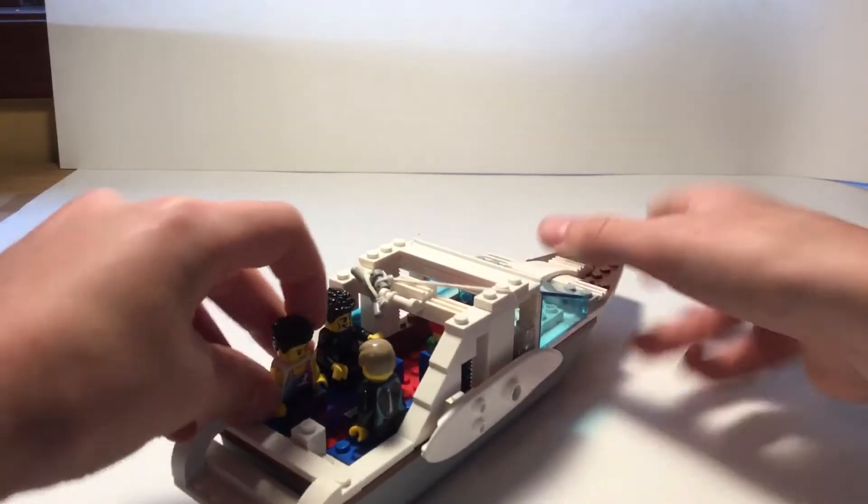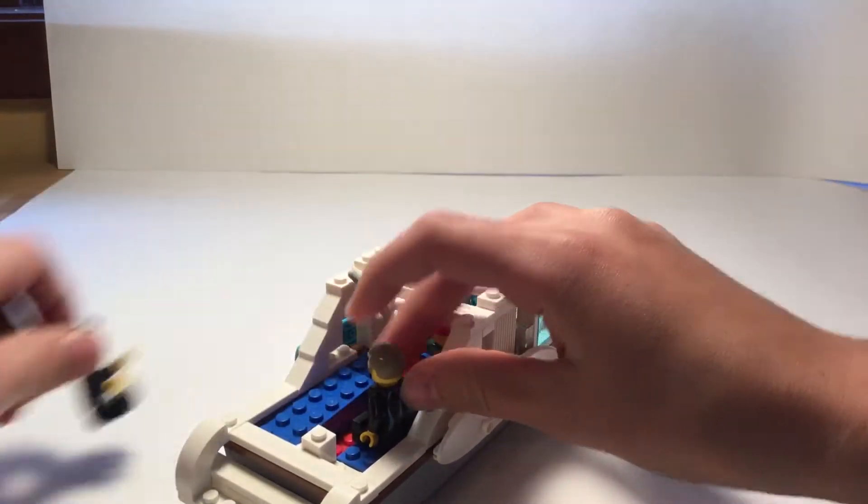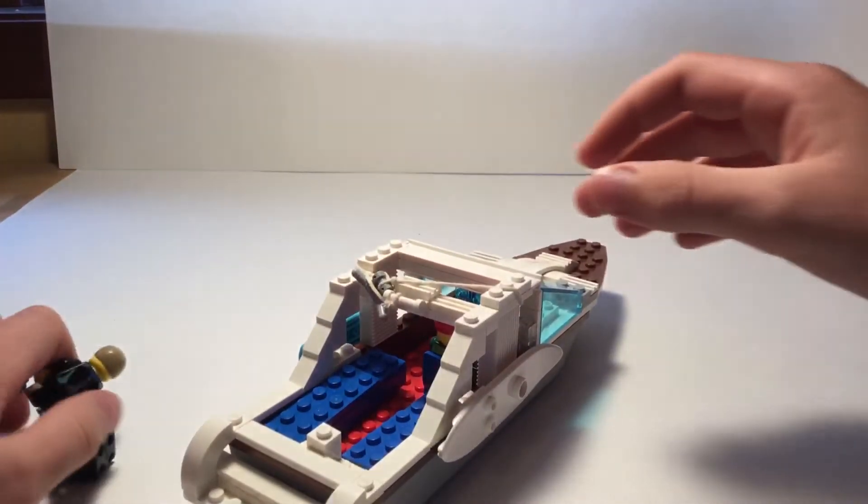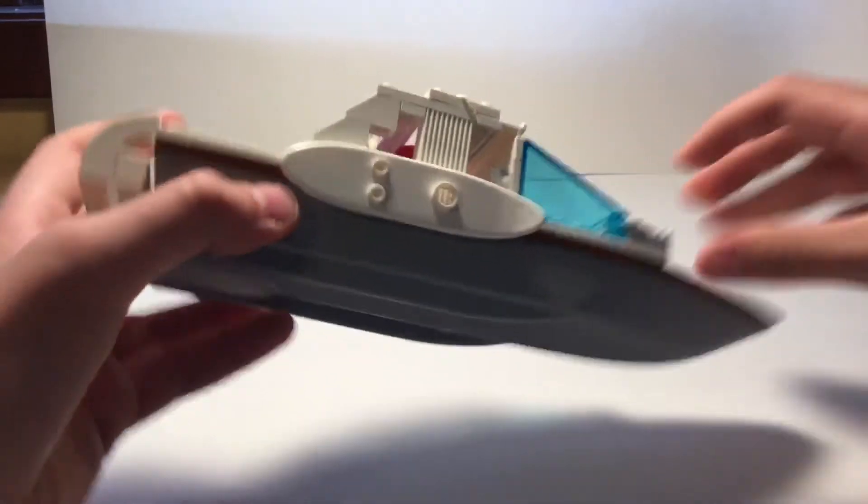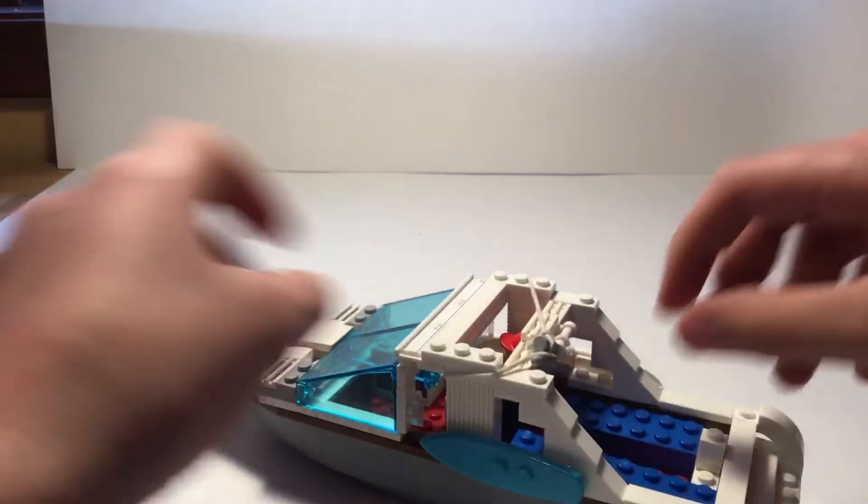First of all we have some minifigs sitting on the back here. I'm just going to take them off so we can see better. There we go. And so we have wakeboards on both the sides here which is pretty cool.